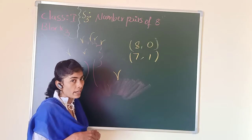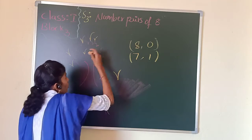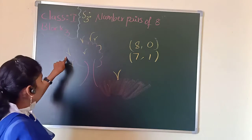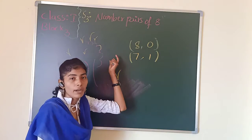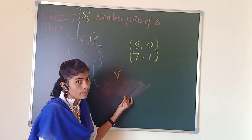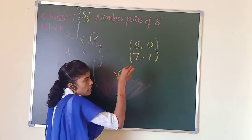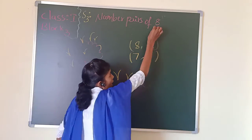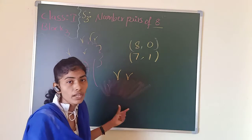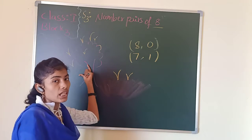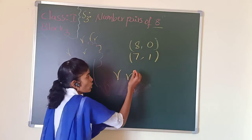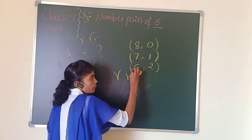Can you guess any other different pair? I am removing 1 monkey from the tree. Now count — 1, 2, 3, 4, 5, 6. How many monkeys are playing on the tree? 6 monkeys. So how many monkeys will be on the grass? There could be 2 monkeys on the grass. There are 8 monkeys total — let's verify: 1, 2, 3, 4, 5, 6, 7, 8. 6 monkeys on the tree and 2 monkeys on the grass — total 8 monkeys. So what other pair can we write? 6 comma 2.